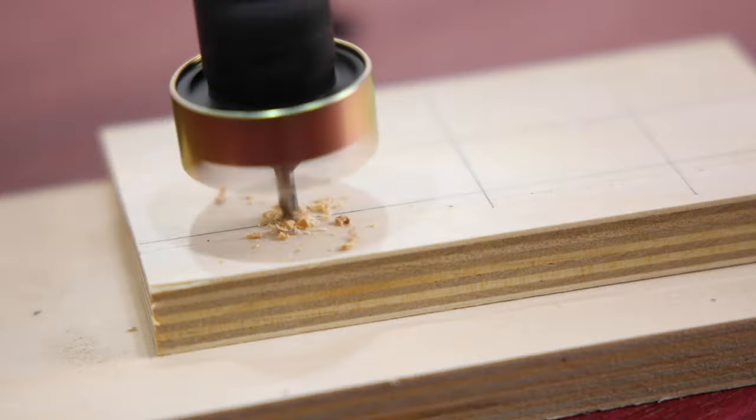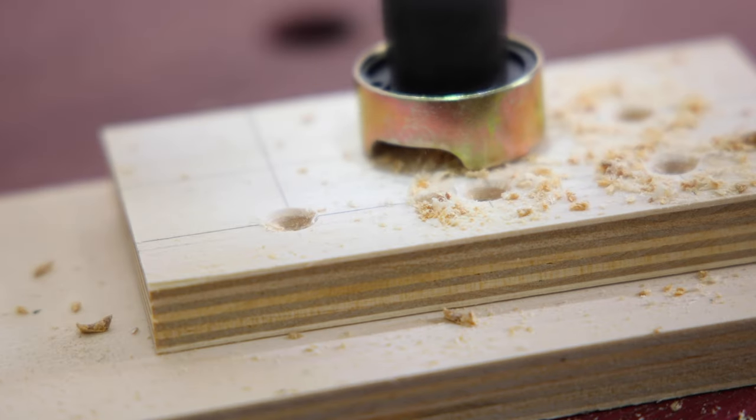Next I'm going to drill and countersink some pilot holes on both B pieces. If you don't feel like using screws in this jig, feel free to use glue instead.